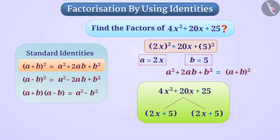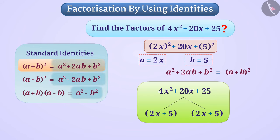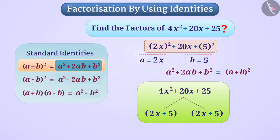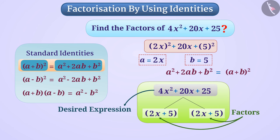In this way, to factorize an expression, first we find the identity which has its right side similar to the expression. Then we find the factors of the desired expression from the corresponding expression on the left side of that standard identity.